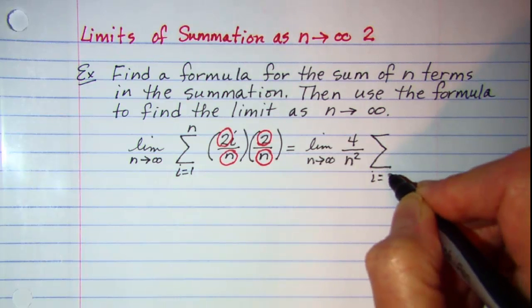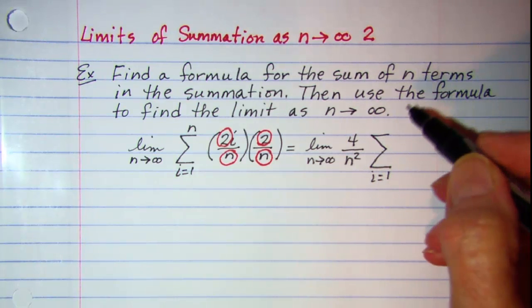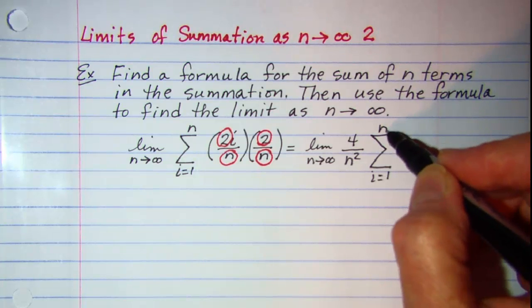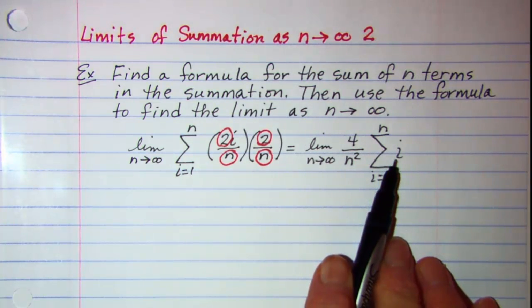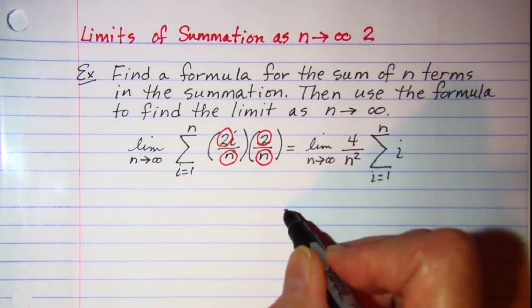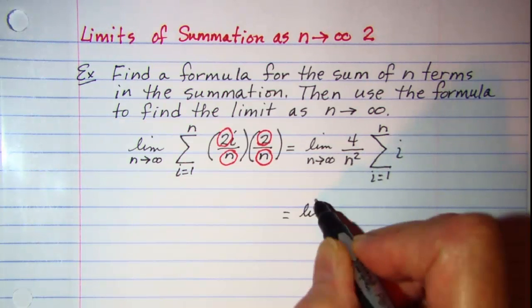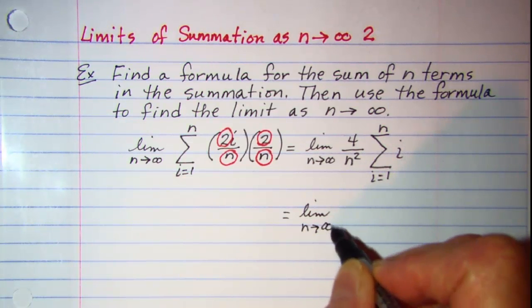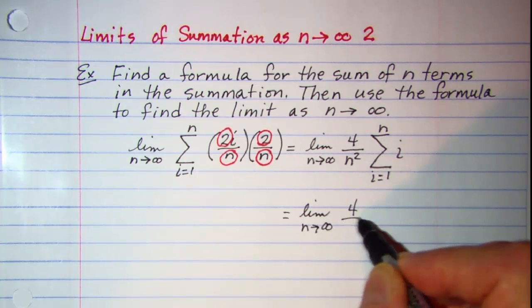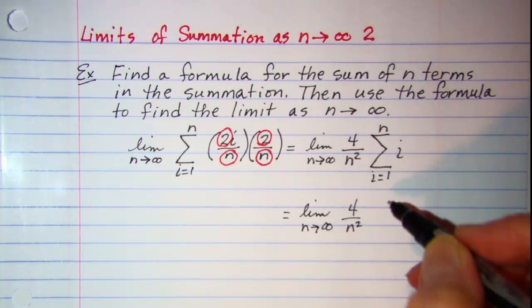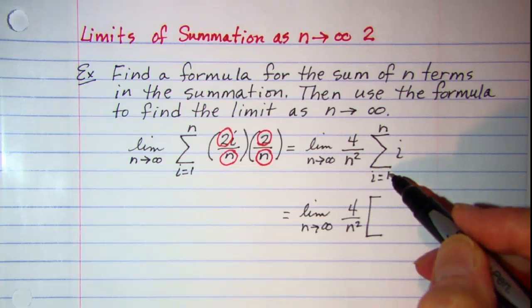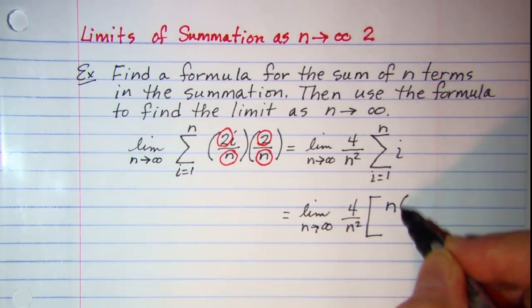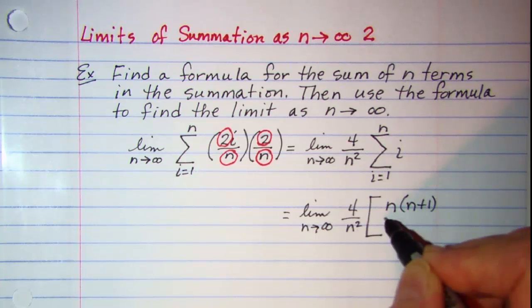So now I'm actually doing the summation as i goes from 1 to n of i. Well this requires formula number 2. So let me copy the limit and the 4 over n squared. And then my formula number 2 says that this is equal to n times n plus 1 divided by 2.